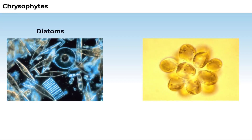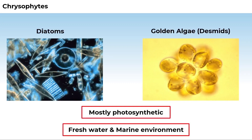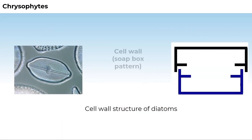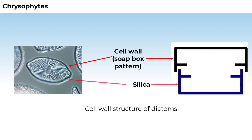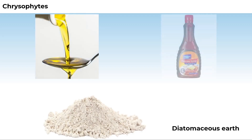Chrysophytes include diatoms and golden algae, and desmids. Most of them are photosynthetic, found in fresh water as well as in marine environments. In diatoms, the cell walls form two thin overlapping shells which fit together as in a soapbox. The walls are embedded with silica, and thus are indestructible. Diatoms have left behind large deposits in their habitat, referred to as diatomaceous earth, which is used in polishing and filtration of oils and syrups.